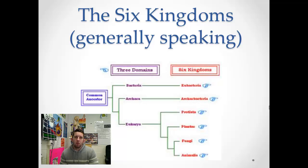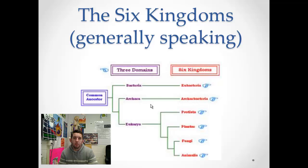The most general of these categories are the three domains: bacteria, archaea, and eukarya. We've talked about them previously and watched screencasts about them. If we delve a little bit deeper into these domains, living things are going to be broken up into six kingdoms beyond the three domains.